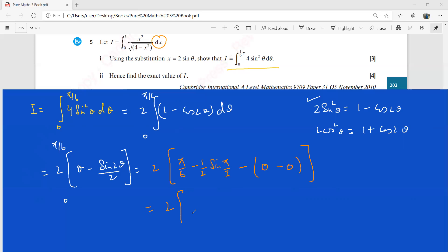So we have 2 into pi by 6, and sine pi by 3 is under root 3 over 2, so this is going to be under root 3 over 4. So you can leave this up to this or you can write it as pi by 3 minus under root 3 by 2. This is the answer, the exact value of this I. Please check your answer.